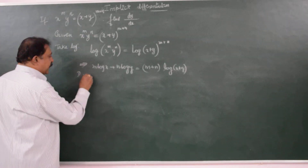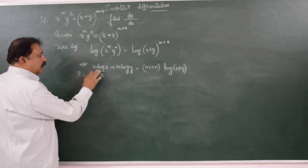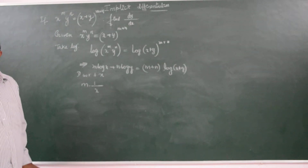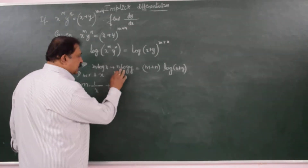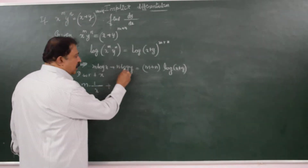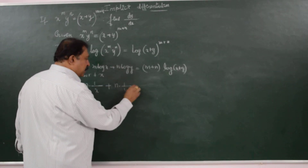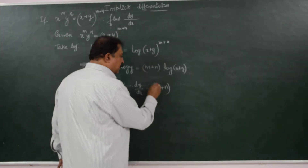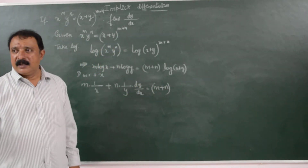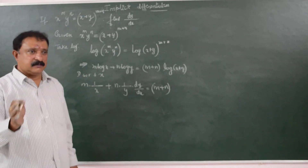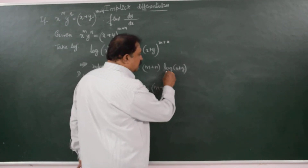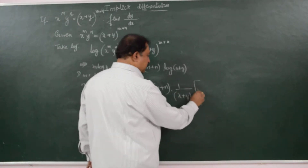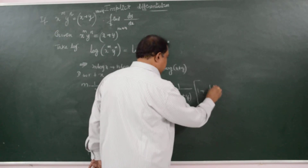Now differentiate with respect to x. m is constant, write it as it is: log x differentiates to 1 by x, times dx/dx which is 1. Plus n is constant: log y differentiates to 1 by y into dy by dx. This is equal to m plus n, constant, write it as it is, times 1 by x plus y, into the differential of x plus y, which is 1 plus dy by dx.